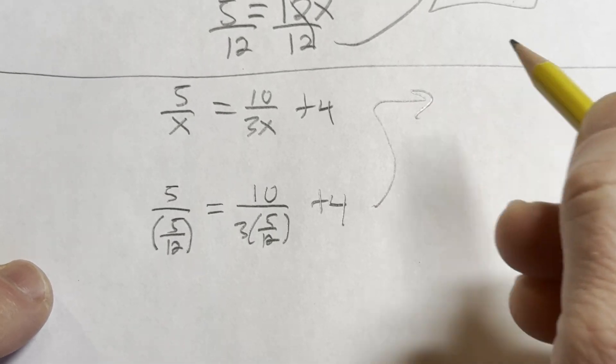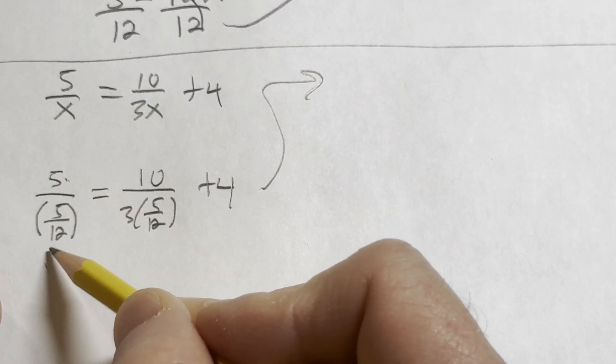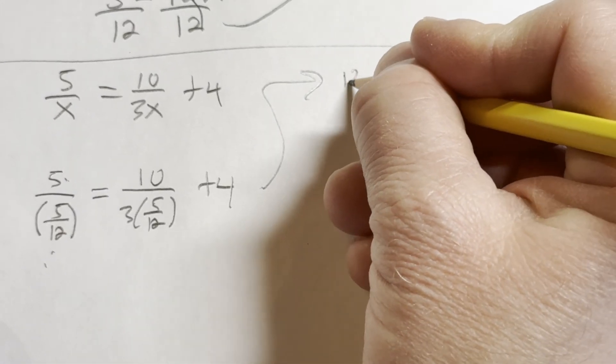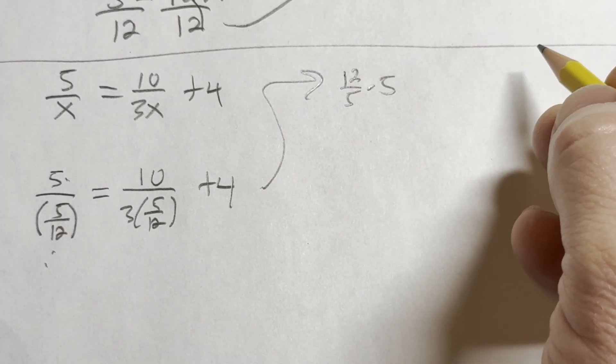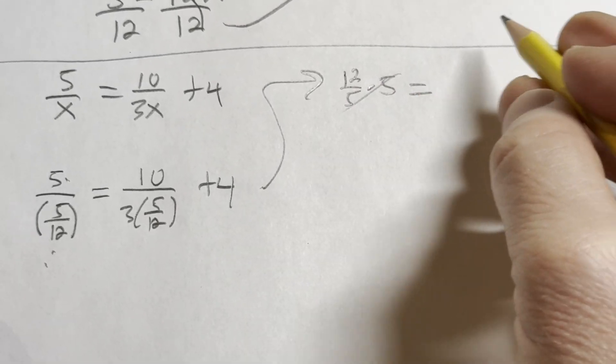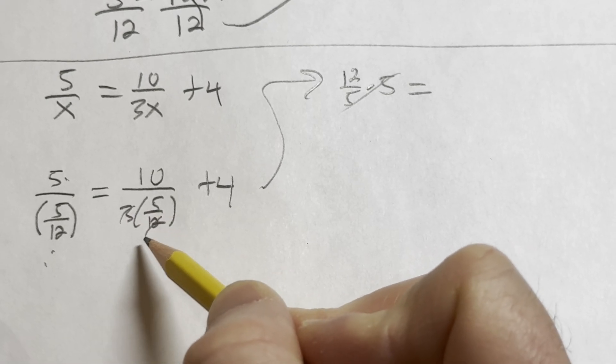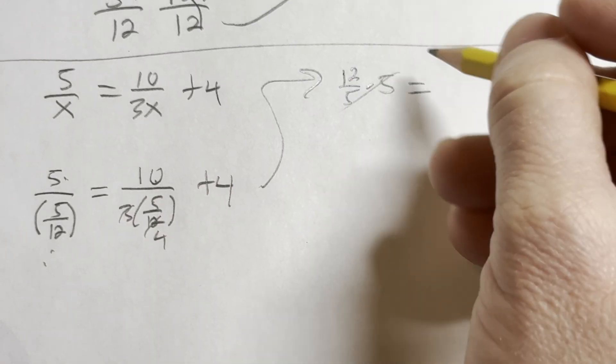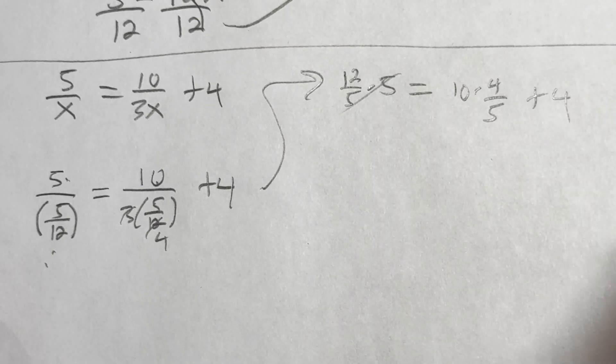Let's come up here. Save some room. So 5 over 5 over 12 is really 5 times 12 over 5 because division is multiplication by the reciprocal. So those will go away, we'll be left with 12. Here, 3 goes into 12 four times. This is 10 divided by 5 over 4, which is 10 times 4 over 5 and plus 4.